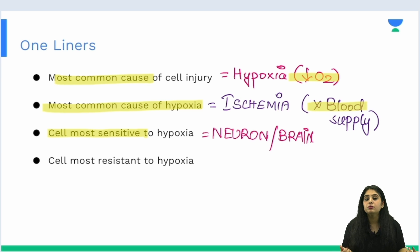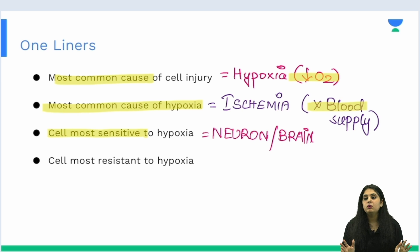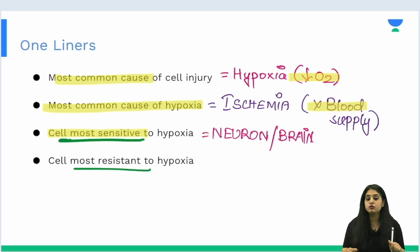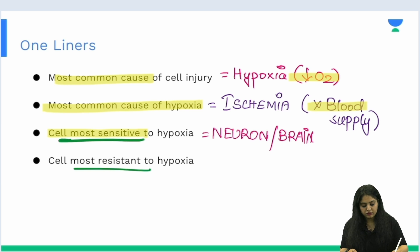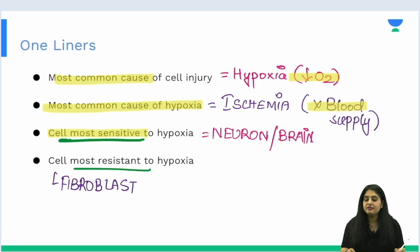The brain or neuron is going to be very sensitive and will give up to hypoxia in approximately three to five minutes. Now, make it a habit — not just in pathology but any subject — whenever you study the most sensitive, also study the other end of the spectrum, the most resistant. The most resistant cell is the fibroblast, which I call the last man standing. It can withstand hypoxia or oxygen deficiency for 60 minutes and beyond.